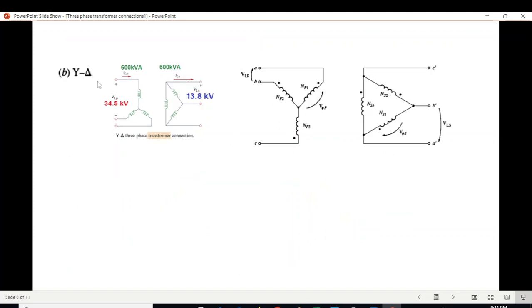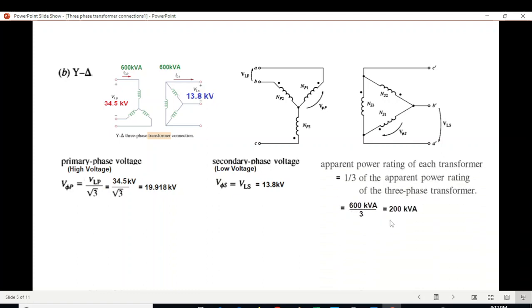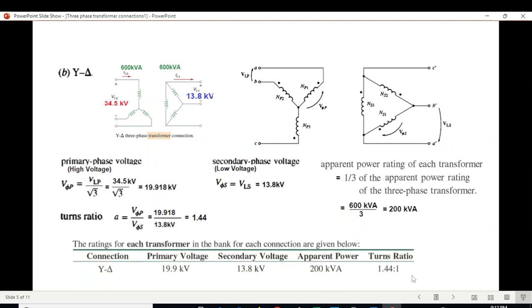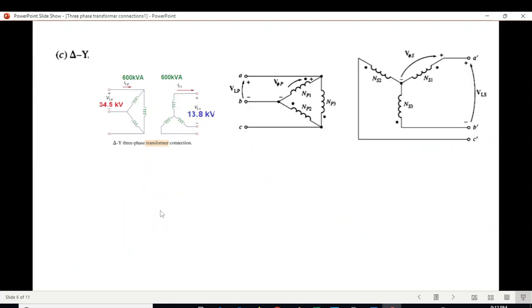Next is Y-Delta circuit. Primary remains the same - Y connection, so line voltage divided by √3. But it's connected to Delta connection where line voltage equals phase voltage. So V_phase secondary equals V_line secondary which is 13.8 kV. Power remains the same, 600 divided by 3 equals 200. Turn ratio calculated as V_p over V_s gives us 1.44. In table form, we get the answer for part B.